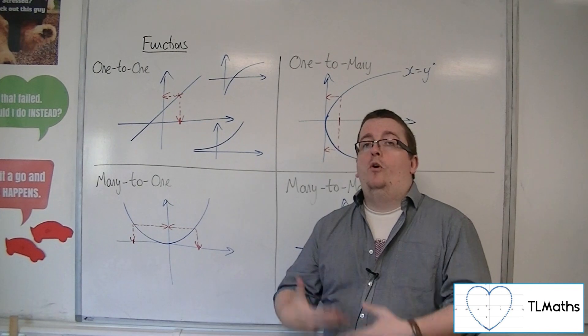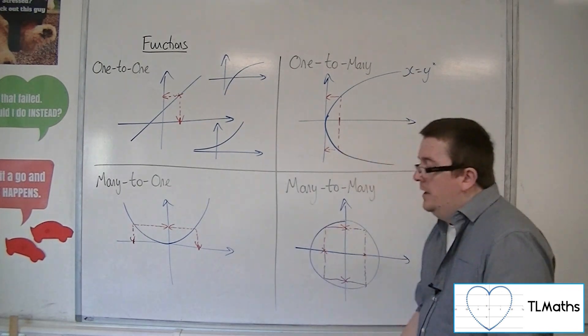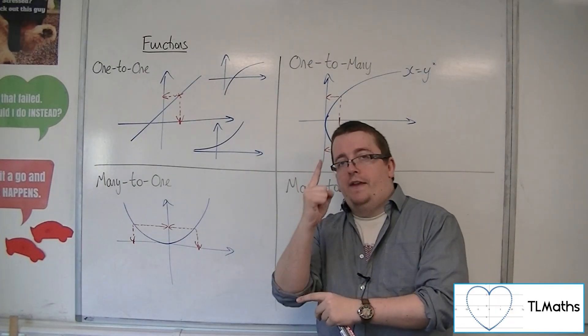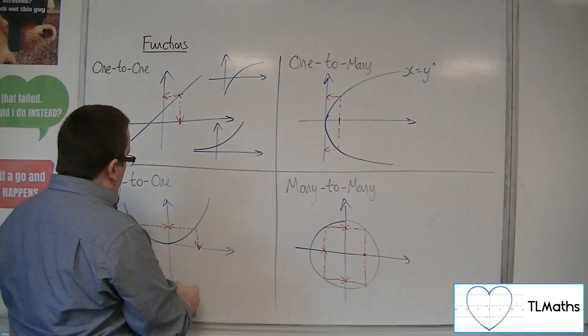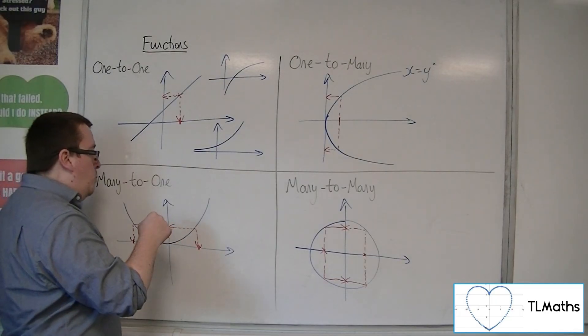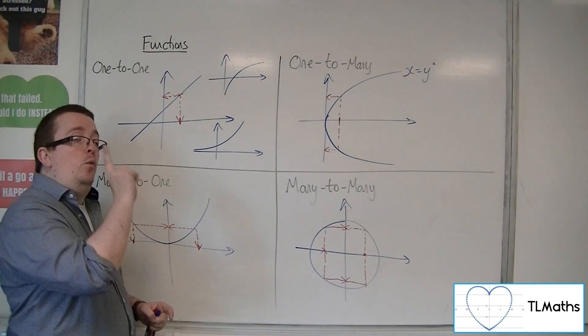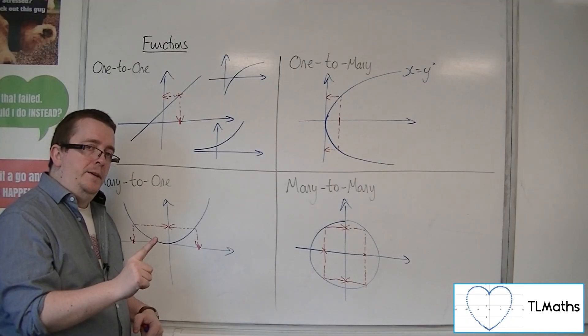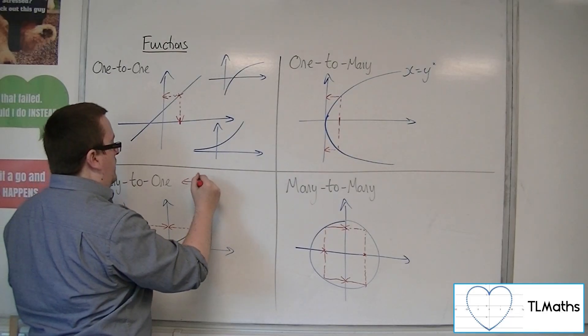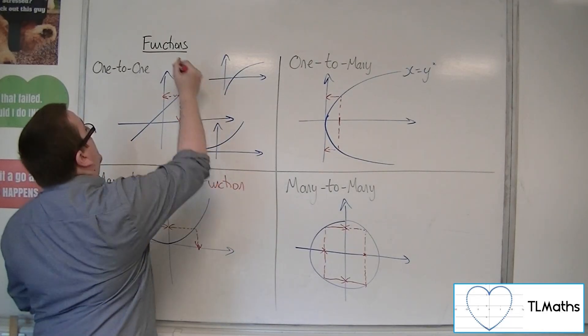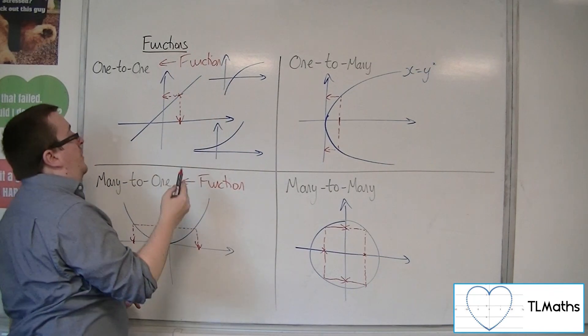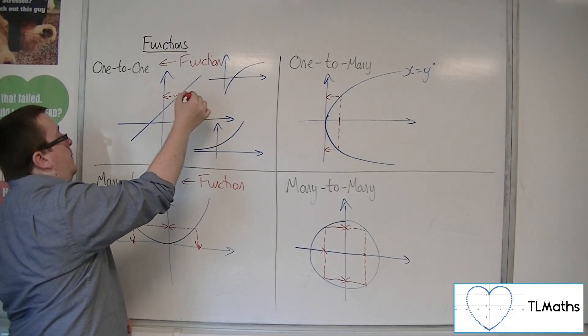What I'm meaning by one input, one output is focusing on the one output aspect. I put something in, I get one thing out. Regardless of the fact that I could put in multiple values of x, like 2 and minus 2, and still get the same y value, the point is that I'm only getting one y value. So this is a function.